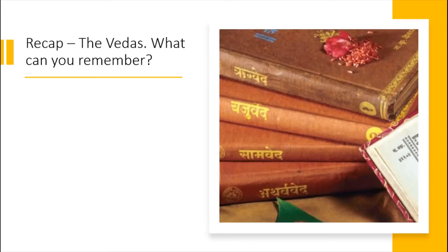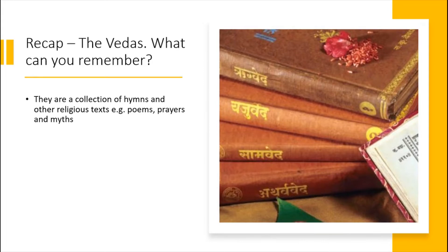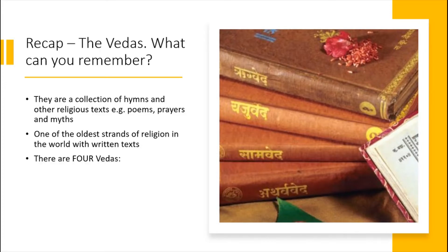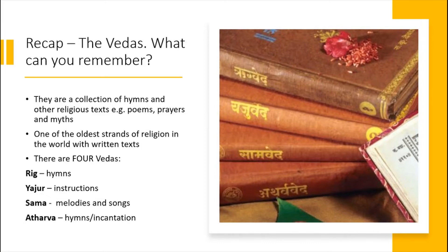Before we investigate the Torah further, I wanted to recap the Vedas. They are a collection of hymns and other religious texts such as poems, prayers and myths. They are one of the oldest strands of religion in the world with written texts, and there are four of them in total: Rig — the hymns; Yajur — instructions; Sama — melodies and songs; and Atharva — hymns and incantation.